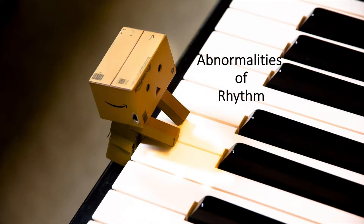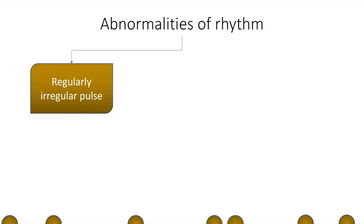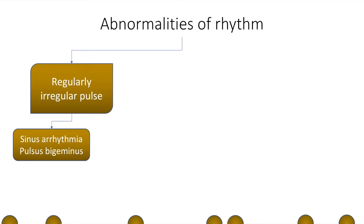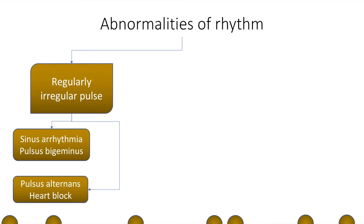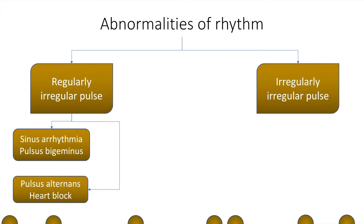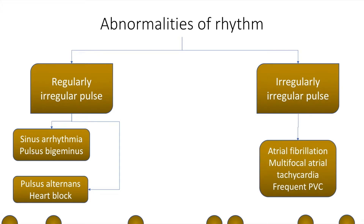Let us now proceed to look at abnormalities of rhythm. These include a regularly irregular pulse, in which case it is because of sinus arrhythmia or pulsus bigeminus, or it can be because of pulsus alternans or heart block. There can also be an irregularly irregular pulse, and this is most commonly due to atrial fibrillation, but it can also be because of multifocal atrial tachycardia and frequent premature ventricular complexes.